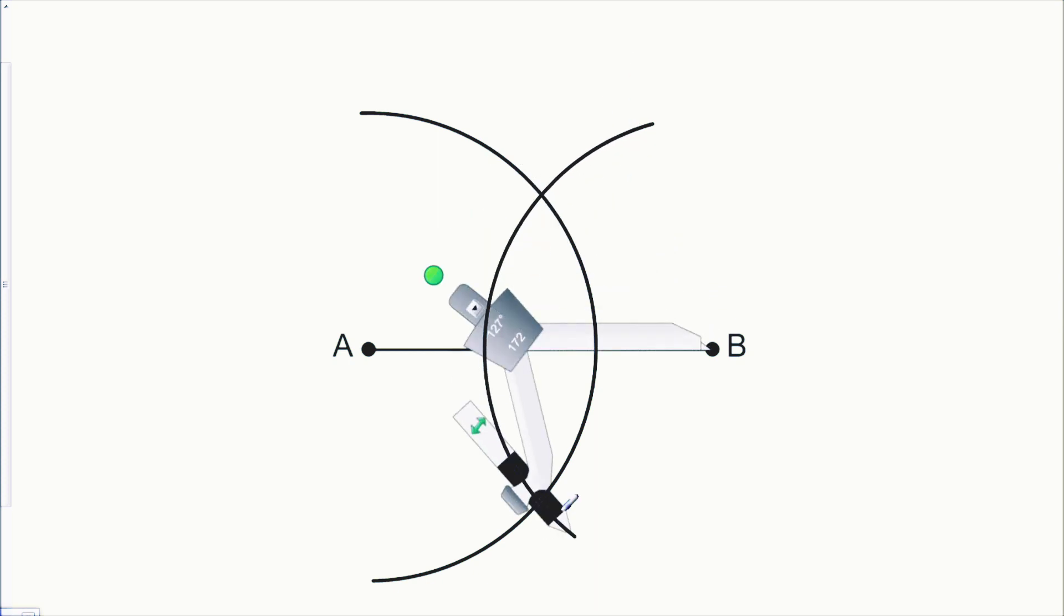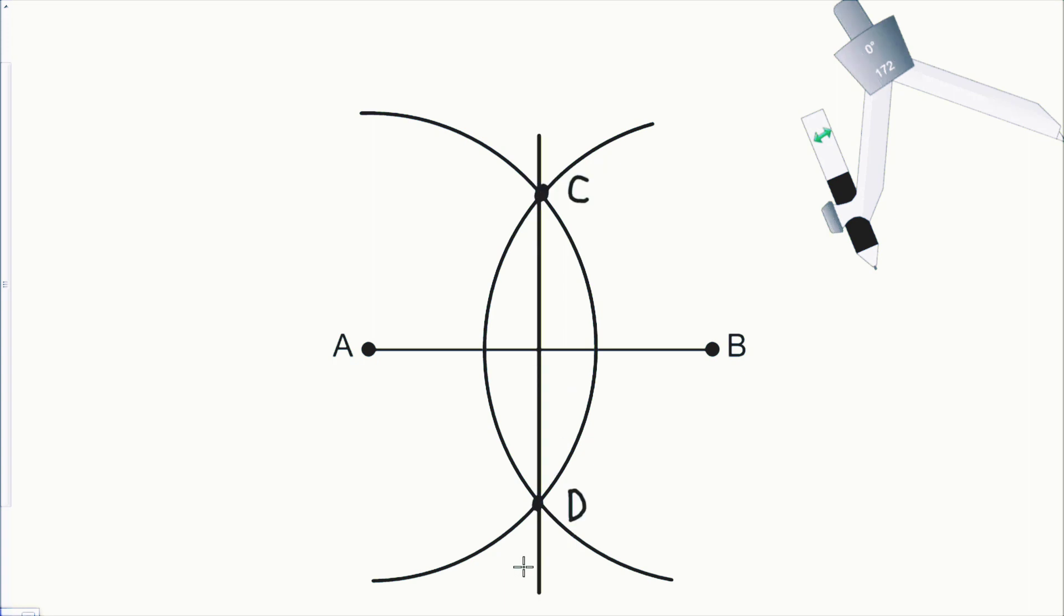And lastly guys, once you do that, we're going to mark the intersection points at both the top and bottom. Then you're going to get your ruler and draw a nice straight line cutting through those points and the line.